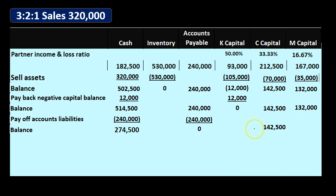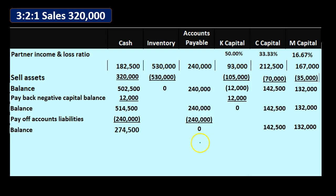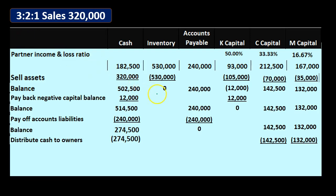Now we can finally pay out the partners and be done with the partnership. The $274,500 cash is equivalent to $142,500 for C plus $132,000 for M. We pay it out in accordance with their capital accounts. Note that these two amounts are not in the same 3-2-1 ratio — that ratio is only for profit sharing and doesn't account for draws or investments, so capital accounts will almost never align with profit sharing percentages.